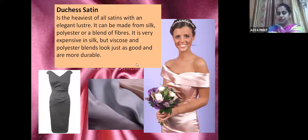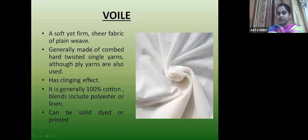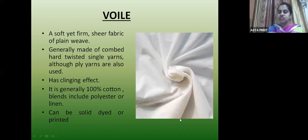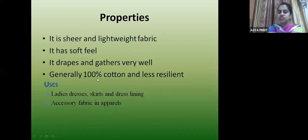Different fabrics used in weaving for fashion designing: First is voile — a soft yet firm sheer fabric. It is formed from hard twisted single yarns, although ply yarns are also used. It is generally 100% cotton, and blends include polyester or linen; it can be solid dyed or printed. Properties: sheer and lightweight, soft feel, drapes and gathers well. Used for ladies dresses, skirts and dress linings.